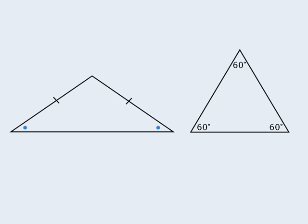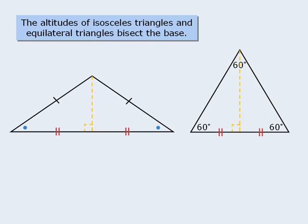Before we end this session, I want to examine one last feature of isosceles triangles and equilateral triangles. For the isosceles triangle, if we begin where the two equal sides intersect and draw a perpendicular line to the opposite side, then the perpendicular line will split the opposite side into two equal lengths. If we do the same thing with an equilateral triangle, the perpendicular line will split the opposite side into two equal lengths as well. Since these perpendicular lines are the altitudes of the two triangles, we can say that the altitudes of isosceles triangles and equilateral triangles always bisect the base.